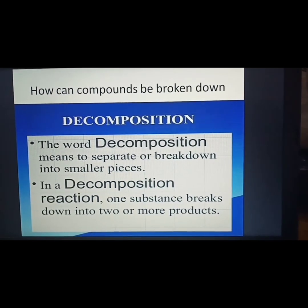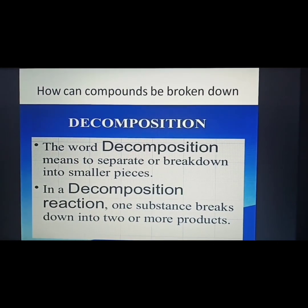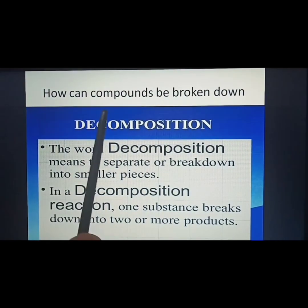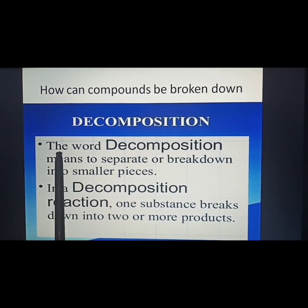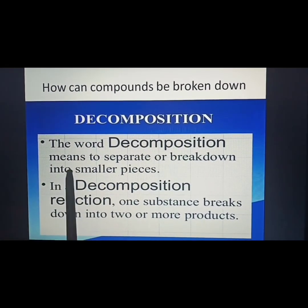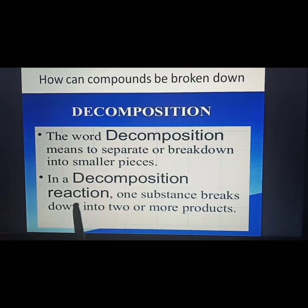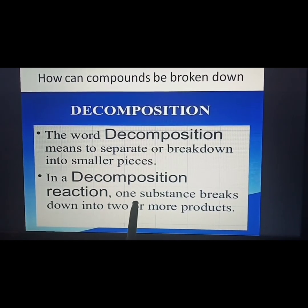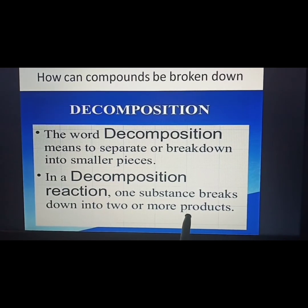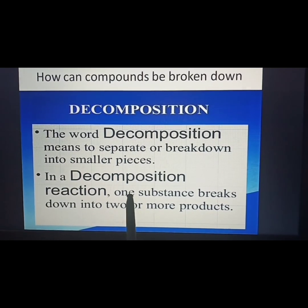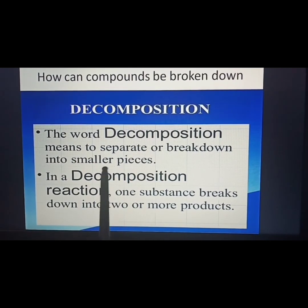How can compounds be broken down? Yes, compounds can be broken down into simpler substances by the process of decomposition. The word decomposition means to separate or break down into smaller pieces. In a decomposition reaction, one substance breaks down into two or more products. One molecule or compound breaks into two or more simpler substances — we call this a decomposition reaction.